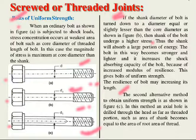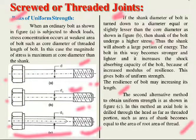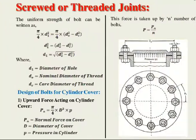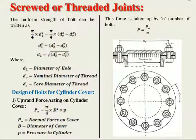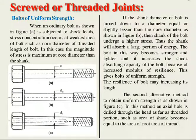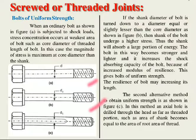In this method, an axial hole is drilled through the head as far as the threaded portion, such that the area of the shank becomes equal to the root area of the thread. By drilling a hole from the head down, you can increase the strength and achieve uniform strength in two ways.